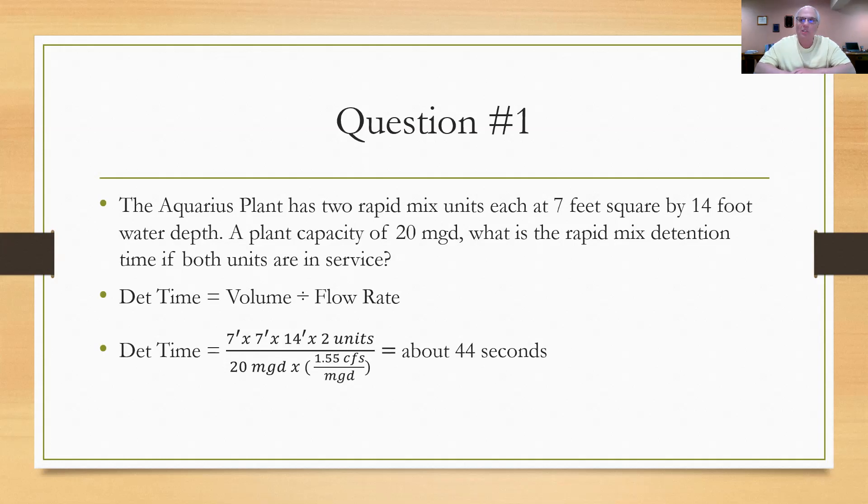If I divide that into the total volume of the two rapid mixers, I come up with about 44 seconds. Now that makes sense. We try to design rapid mixers on conventional water treatment plants to be less than a minute, typically 45 seconds, 30 seconds. And sure enough, this plant was designed with two of them to give you almost 45 seconds with both of them in service at the max flow rate of 20 mgd.